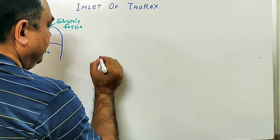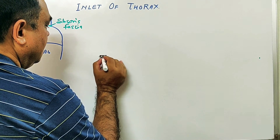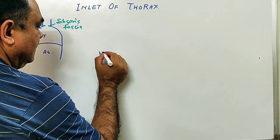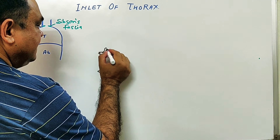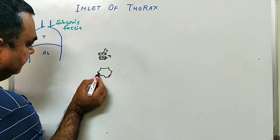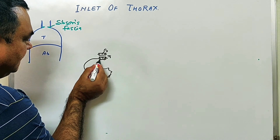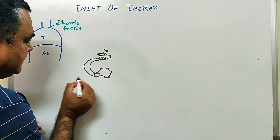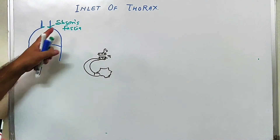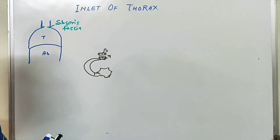Here is the sternum — manubrium sternal. Here is the position of T1 vertebra, this is T1 vertebra, and here is C7 vertebra. Here is the position of the first rib, and this is the costal cartilage of the first rib. Sibson's fascia possibly covers this opening — this inlet.